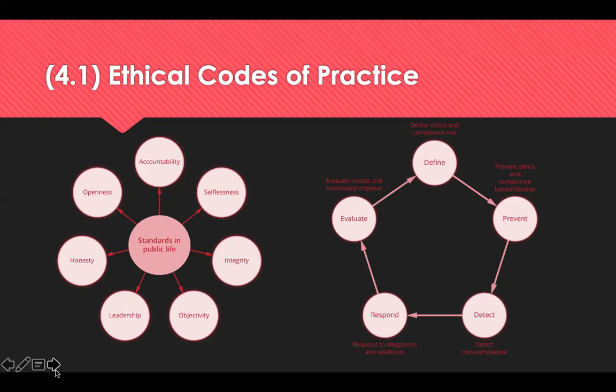Whistleblowing is the exposure or reporting of information that suggests some form of wrongdoing within the workplace. If the ethical code of conduct within an organisation is breached, there are consequences for both the individual who carried out the breach and often the associated organisation. Looking at the process associated with the code of ethics: firstly, define the ethics and compliance risks; then prevent ethics and compliance lapses and failures. There may be a need to detect any non-compliance through audits, then respond to allegations of violations. Finally, evaluate results and look to continually improve.